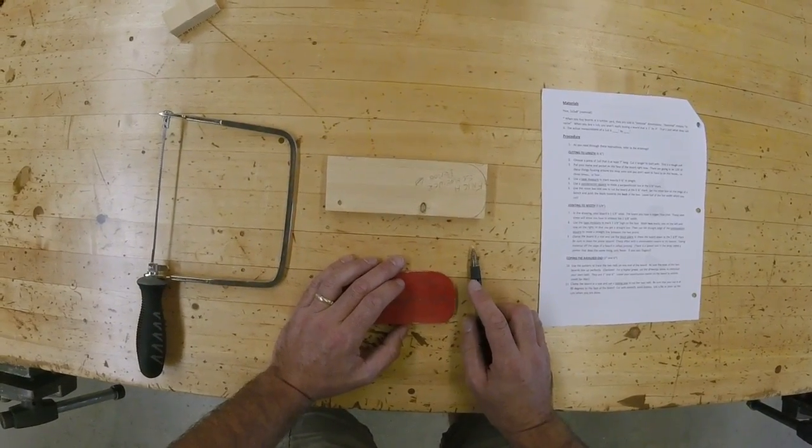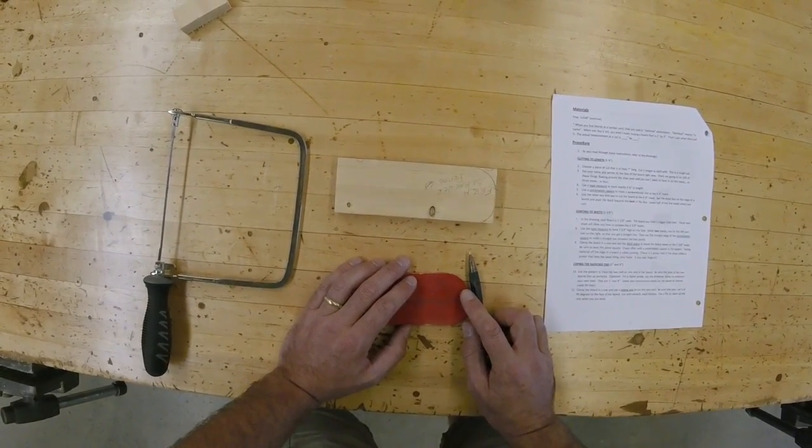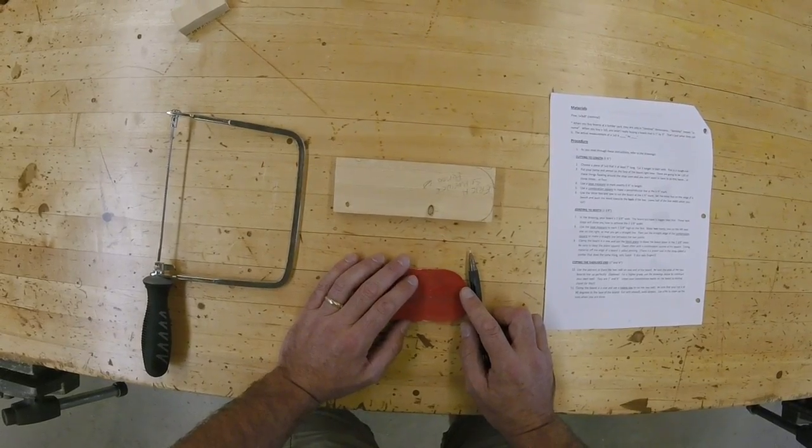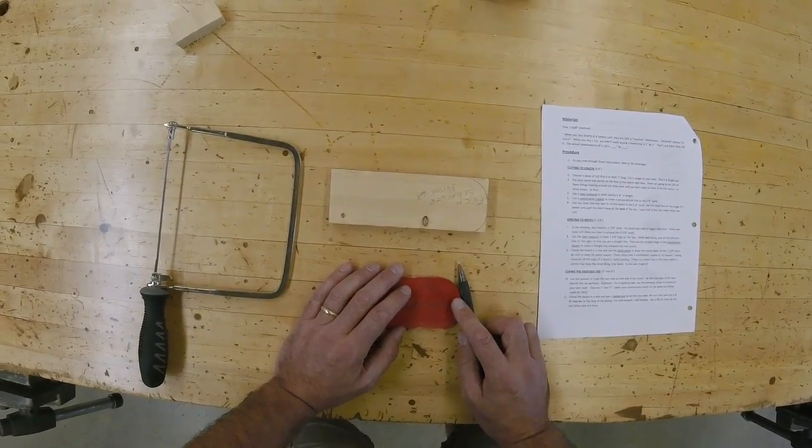Clamp the board on a vise and use a coping saw to cut the two radii. Be sure your cut is at 90 degrees to the face of the board. Cut with smooth, even strokes. Use a file to clean up the cuts when you are done.